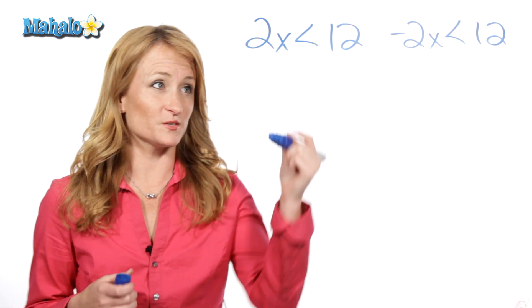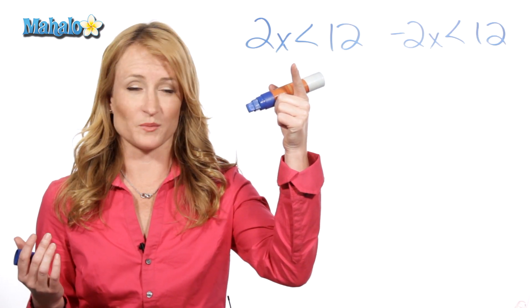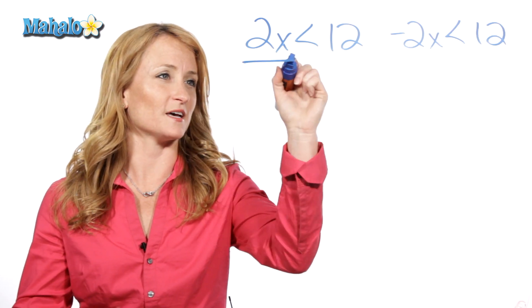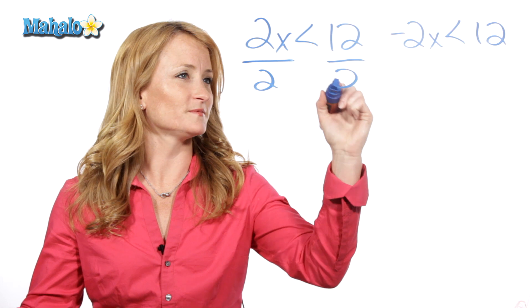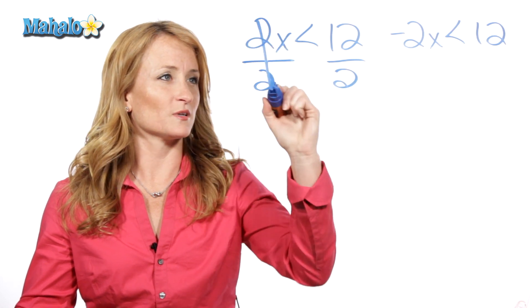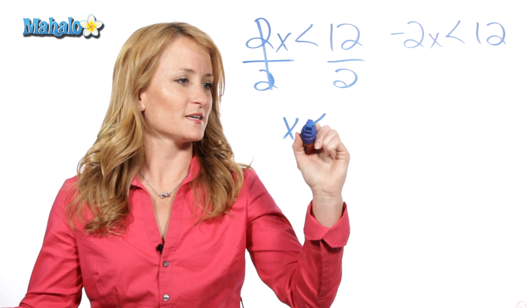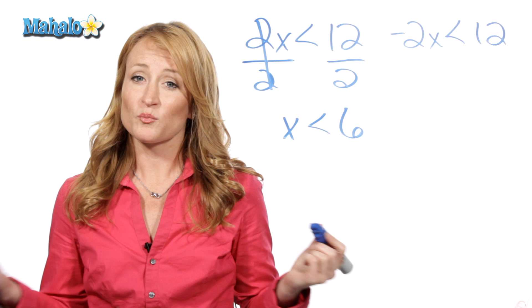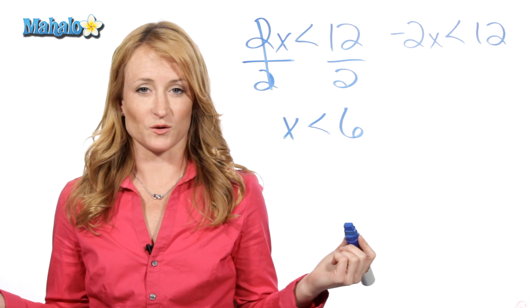If we were going to solve this problem here, we would divide by 2 on both sides, trying to get the variable by itself. So divide by 2, we're left with x is less than 6. Didn't have to do anything with that inequality.